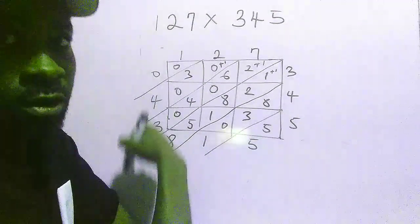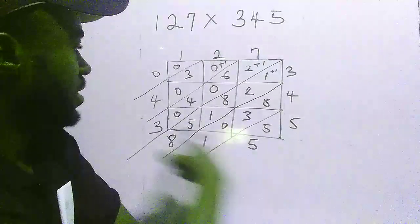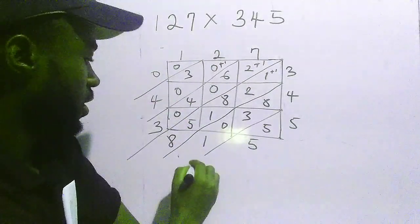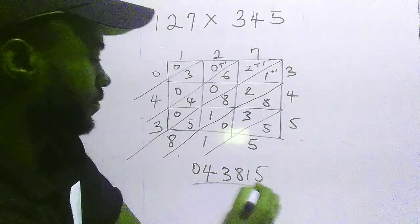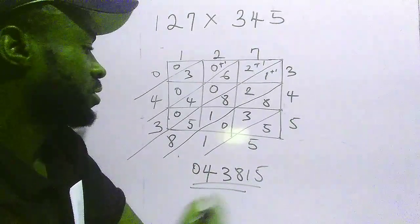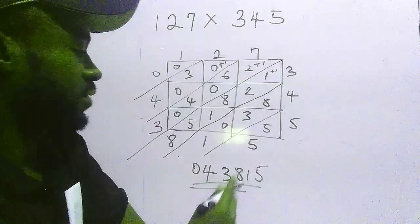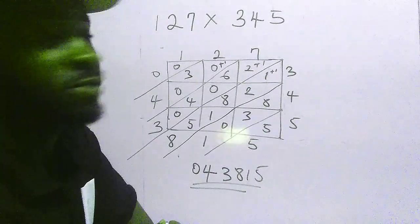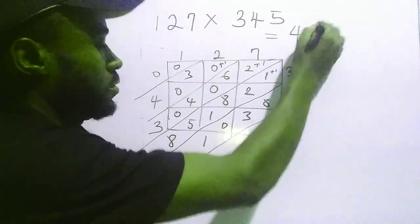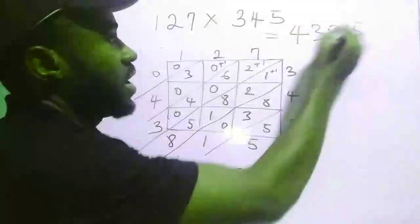I'll write out all the numbers by the side. My answer is 043815, which is forty-three thousand, eight hundred and fifteen. So the solution is 43,815.